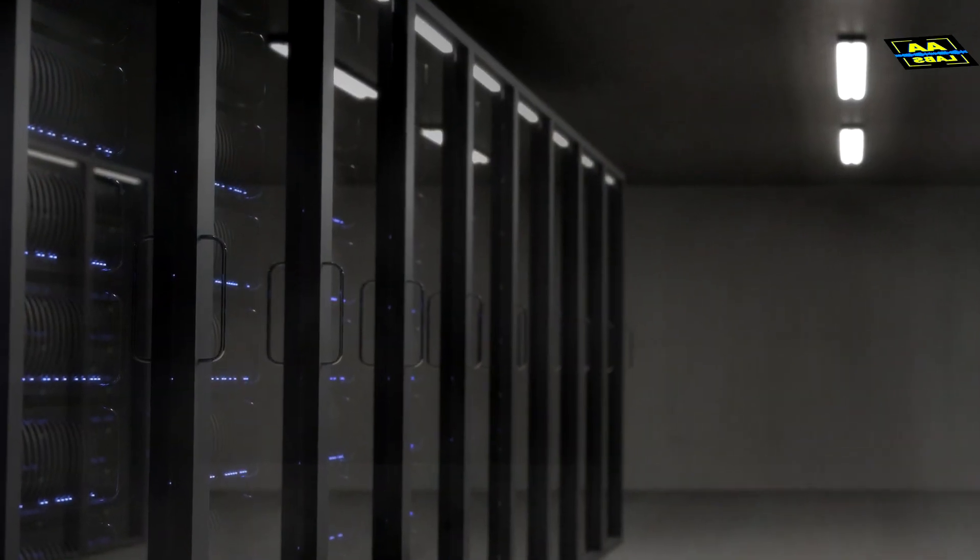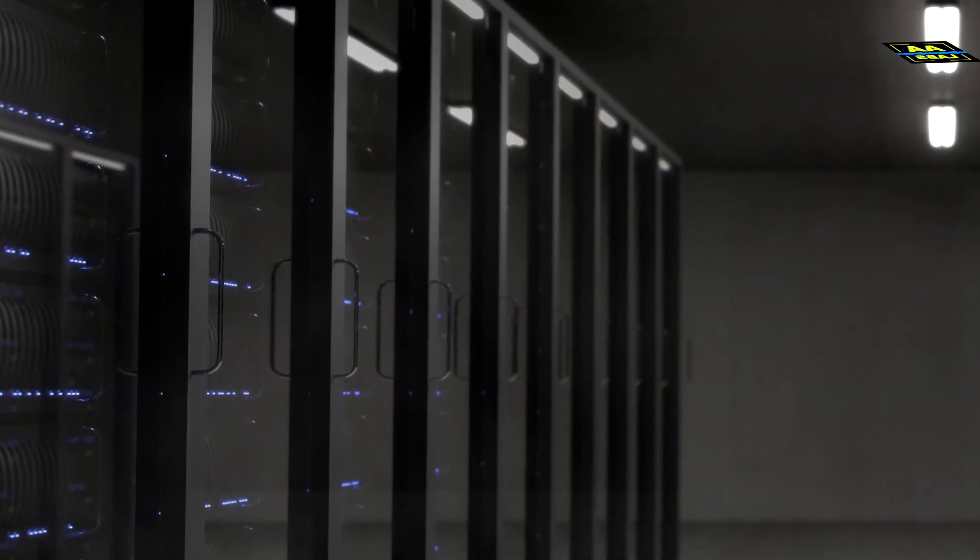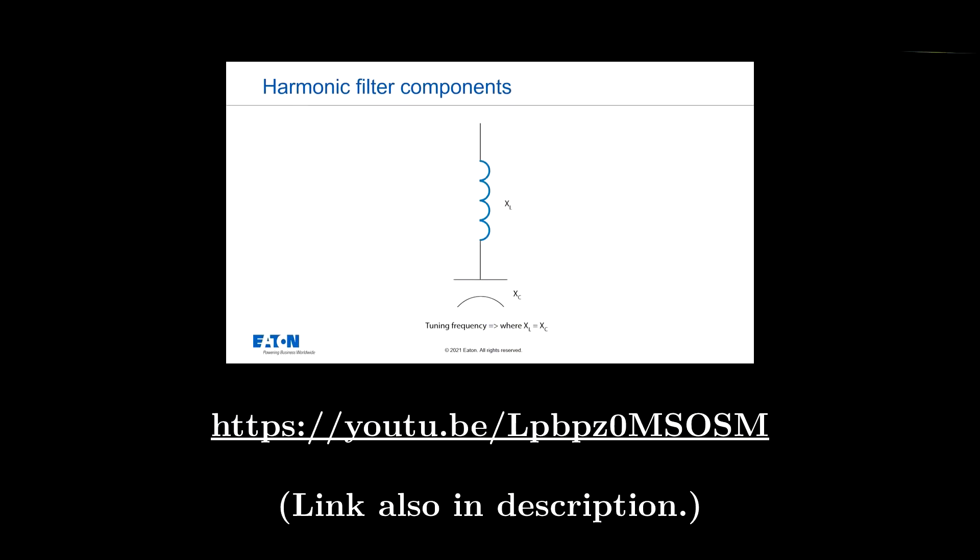Harmonic mitigation is thus necessary for environments where there are high-power nonlinear loads. A harmonic filter, in its simplest form, is just a tuned inductor capacitor circuit designed to shunt the voltage of a single harmonic frequency. Eaton Electrical has some great videos on how both passive and active harmonic filters work. Links are in the description.